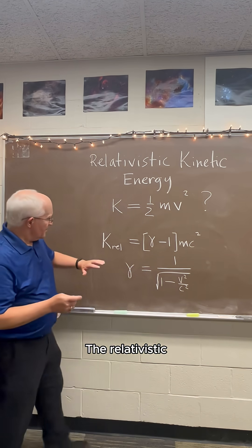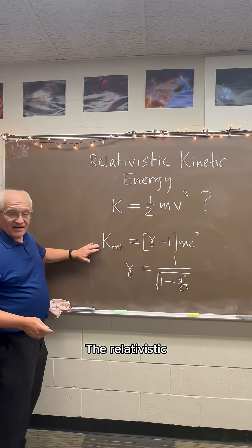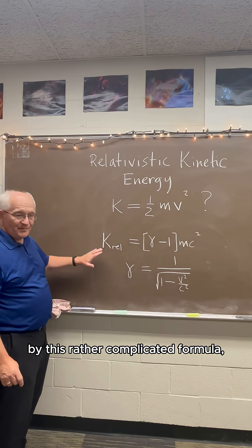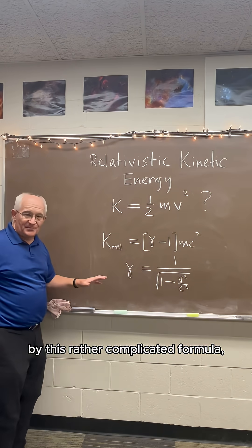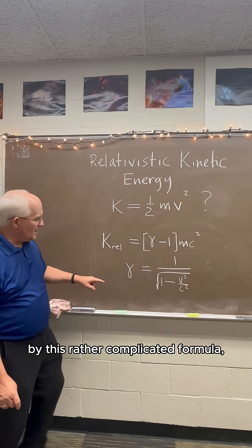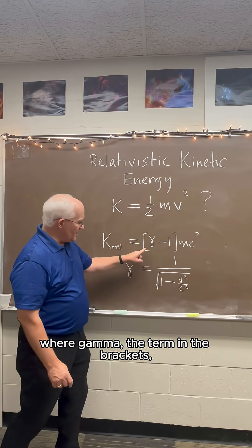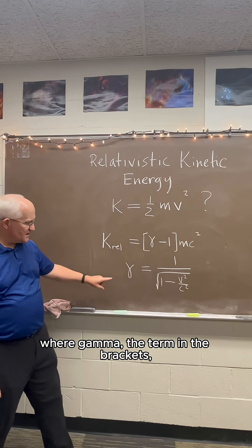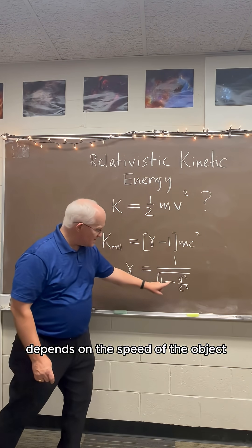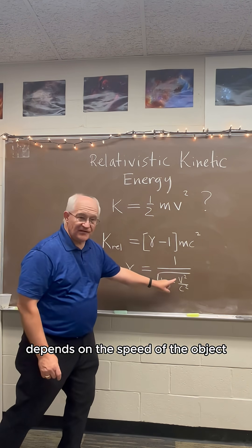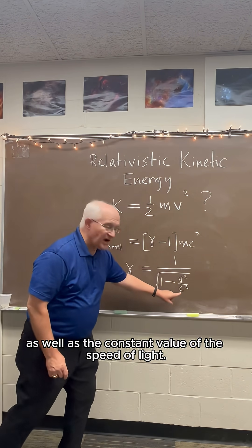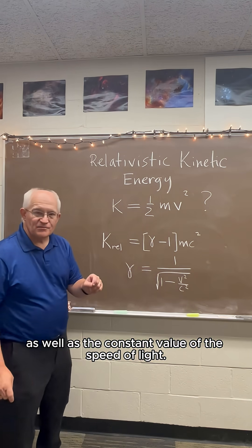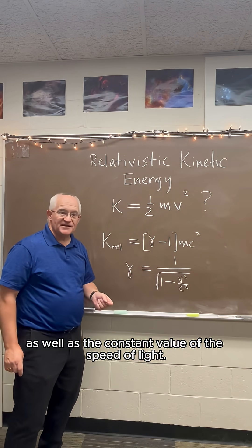The relativistic kinetic energy equation is actually given by this rather complicated formula, where gamma — the term in the brackets — depends on the speed of the object as well as the constant value of the speed of light.